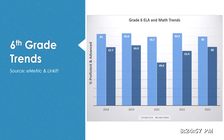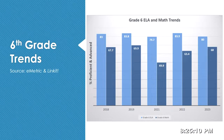Grade six is the next slide, similar setup — ELA on the left, math on the right. Very similar to the fifth grade trends: ELA remains relatively stable. The math scores did dip down in 2021, and they've rebounded to where we were before COVID.